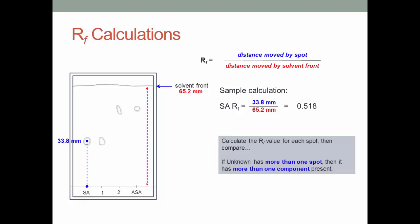Calculate the RF value for each spot, and then compare. If your unknown has more than one spot, then it has more than one component present.